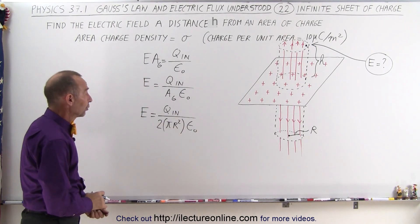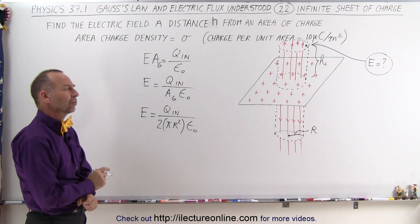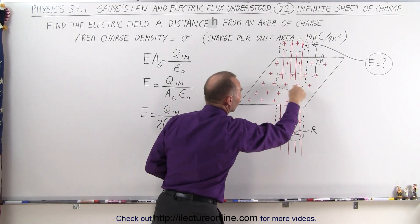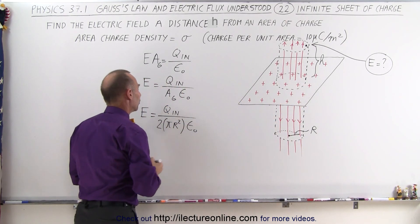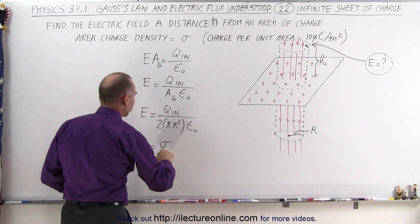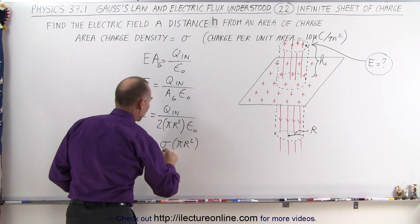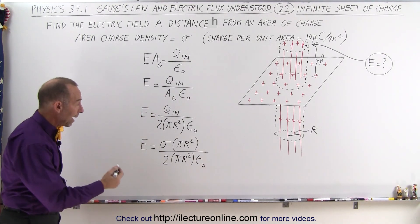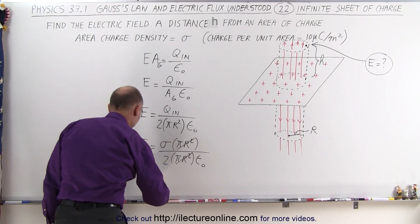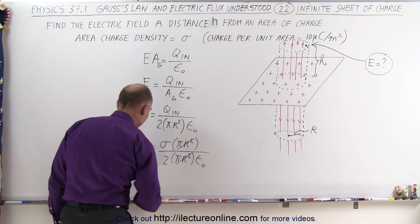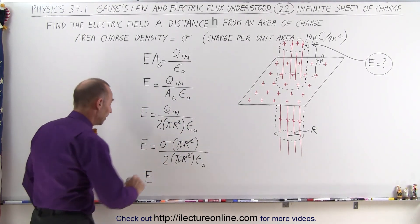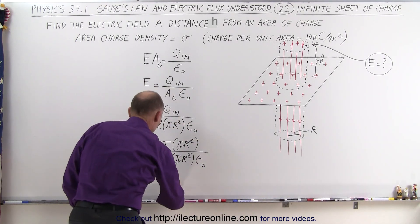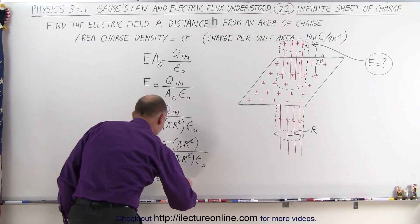We don't have to worry about the sides since no electric field exits there. Now we need to find Q_inside. We find it by taking the area charge density sigma and multiplying by the area of that circle, pi r squared. So E equals sigma times pi r squared divided by two times pi r squared times epsilon sub naught. Interestingly, pi r squared cancels in both numerator and denominator.